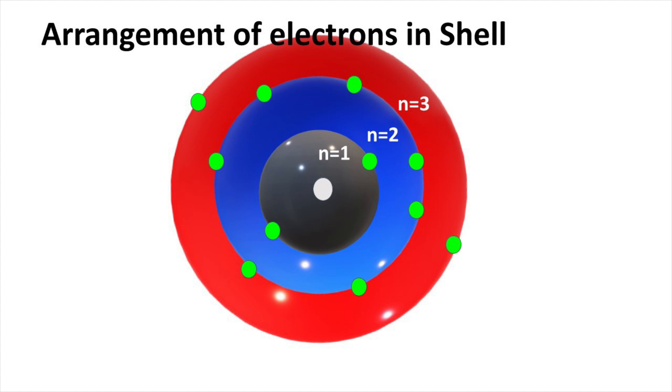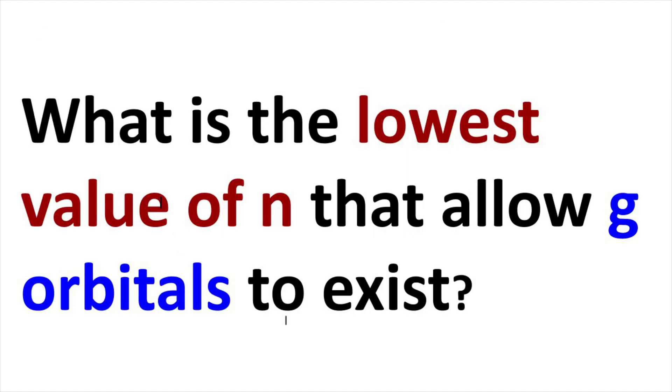Welcome to Aurora Chemistry for Everyone. In this video we are going to see what is the lowest value of n that allows the g orbital to exist.